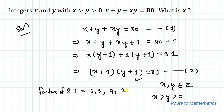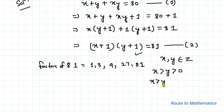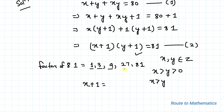Since x is greater than y, x plus 1 cannot equal 1, 3, or 9. If x plus 1 were 1, 3, or 9, then the corresponding value of y would have to be greater than x, which contradicts the given condition that x is greater than y. So we discard those cases.